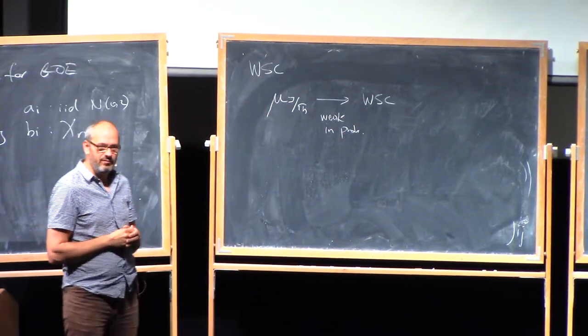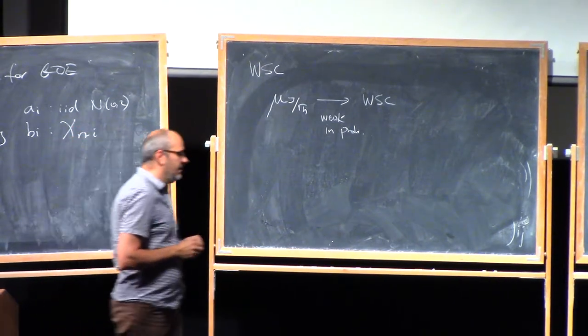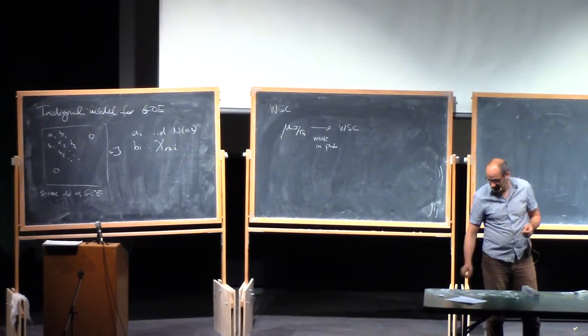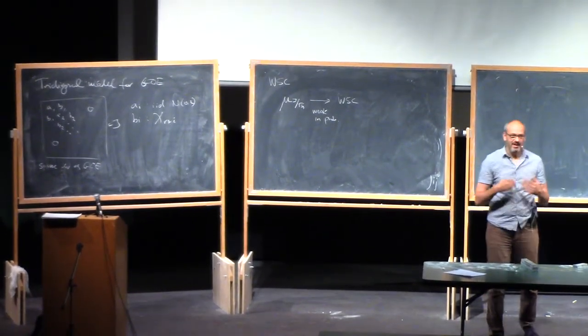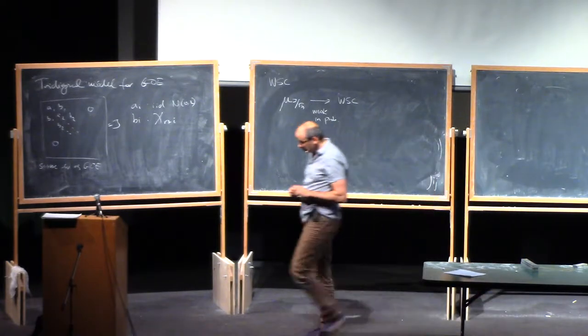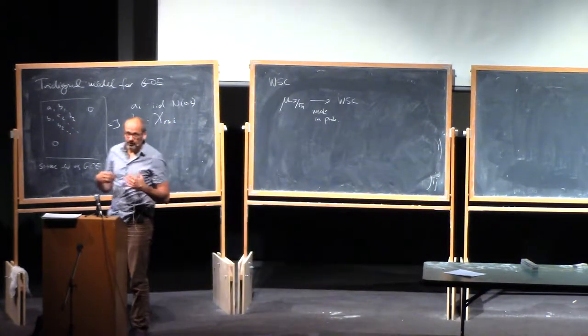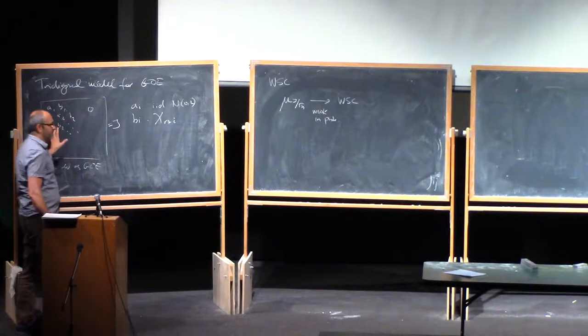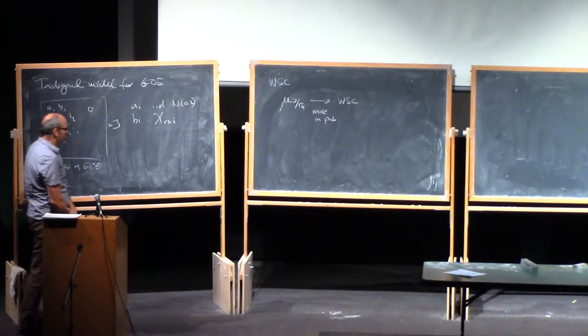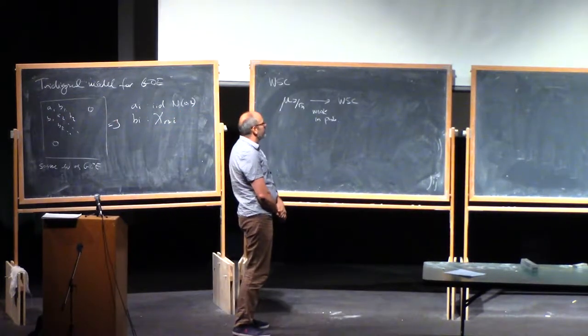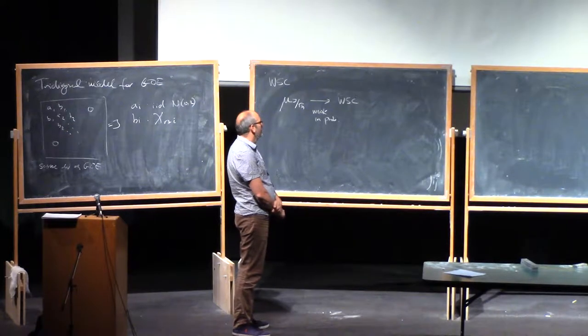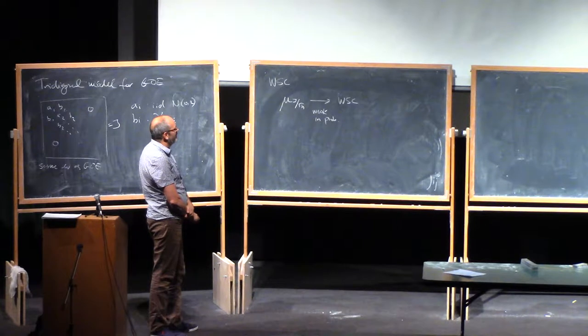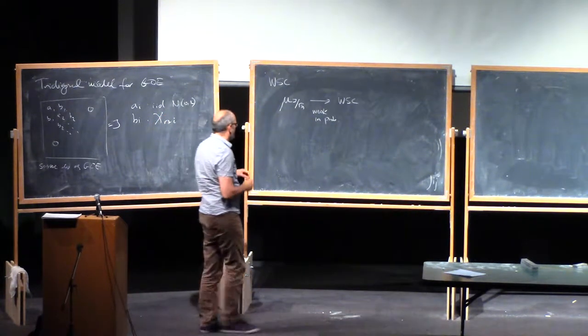Today I want to start with doing some refinements of this, just proving some classical things using this representation. And then we're going to go on and talk more about how you can write general beta ensembles this way.